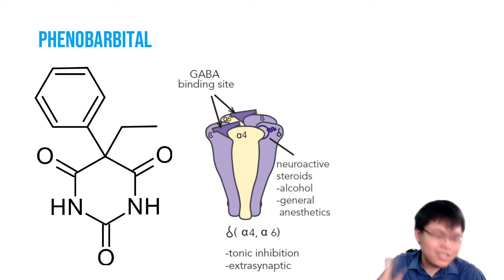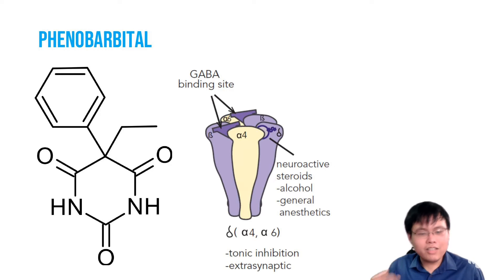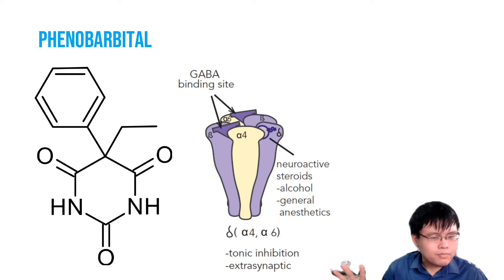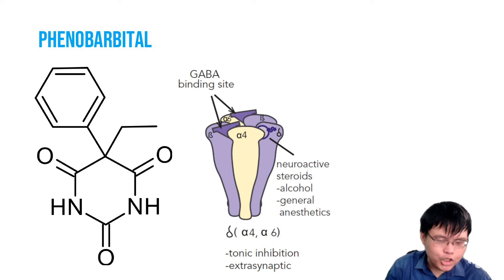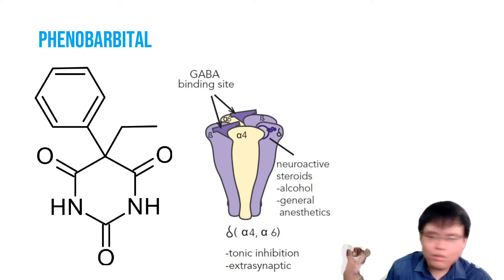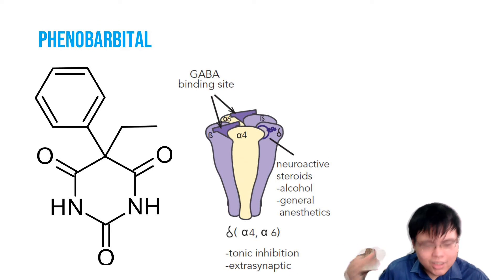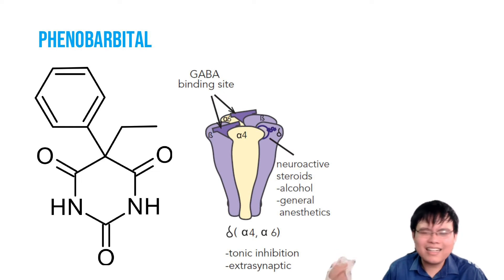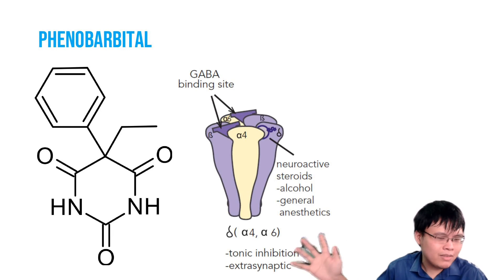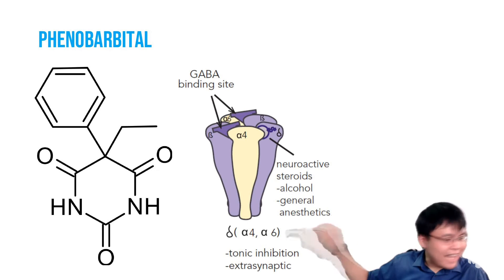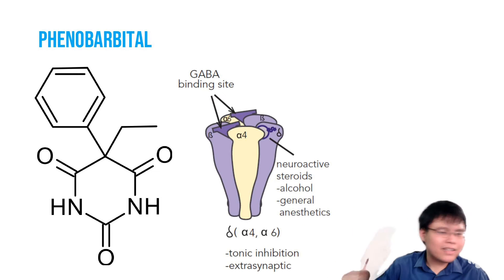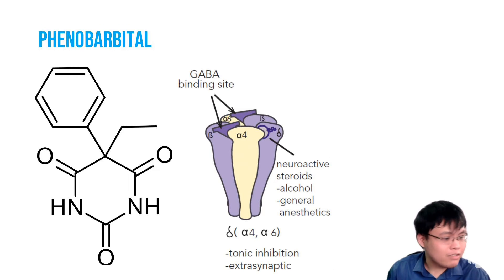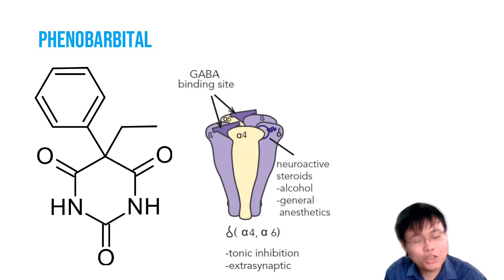The first niche is febrile seizures — phenobarbital is still first-line in neonatal febrile seizures. Number two, for the previous generation who did not have many anti-epileptic drugs to choose from, they were on phenobarbital and it's dangerous to discontinue — you need to continue it because stopping it is more dangerous for those who have been on it for decades. Number three is refractory status epilepticus: if benzos fail, levetiracetam fails, phenytoin fails — phenobarbital is an option.